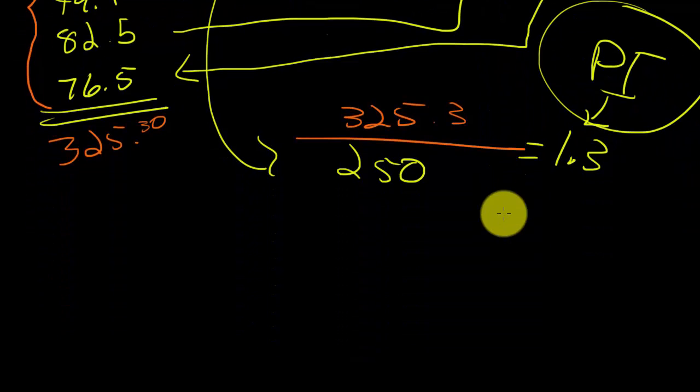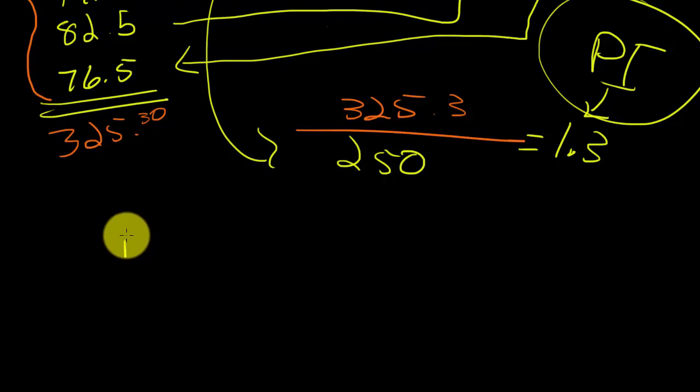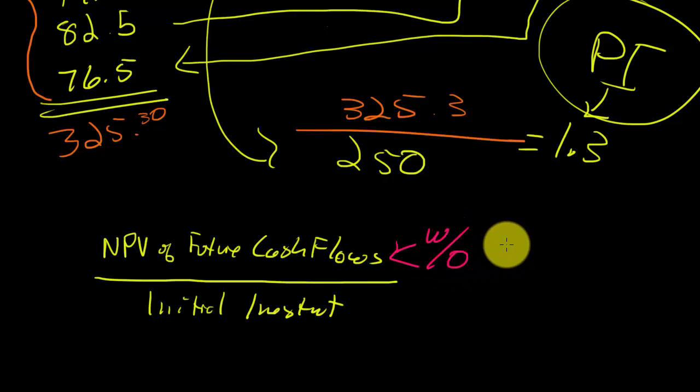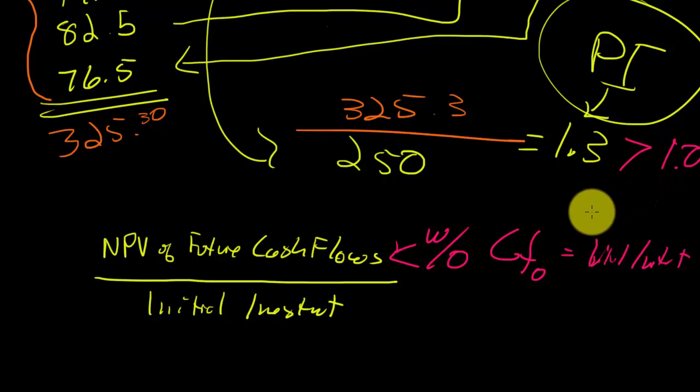This can seem a little confusing. Just remember that on top, I have the present value or net present value of the future cash flows. And on the bottom, I have the initial investment. And the most important thing about this is that this guy is without cash flow 0, which is the same as saying without the initial investment. That's it. The only other thing that we want to take advantage of here is that we're going to accept those projects that have a PI greater than 1.0. Is 1.3 greater than 1.0? Yes. Therefore, we go ahead and accept the project.